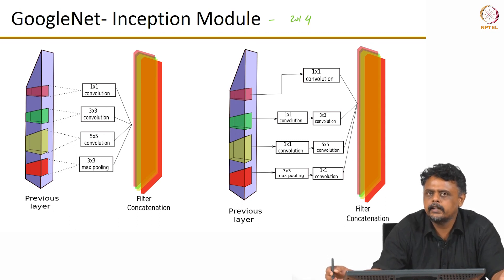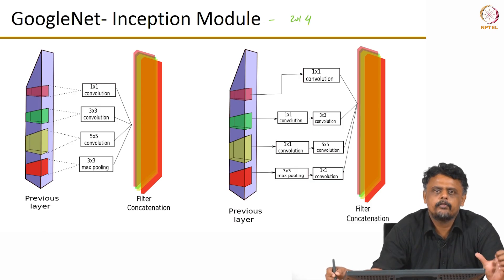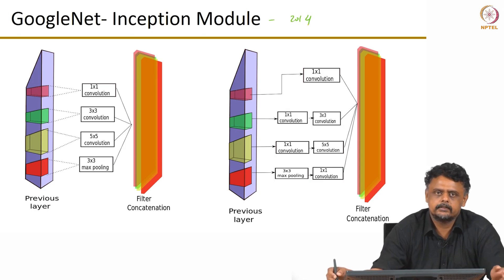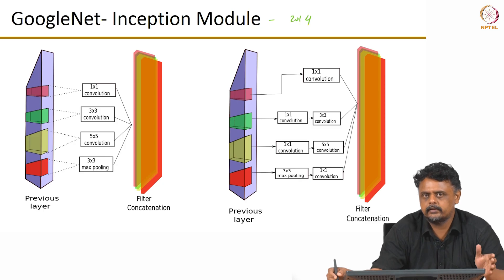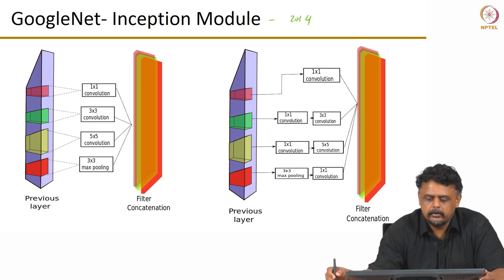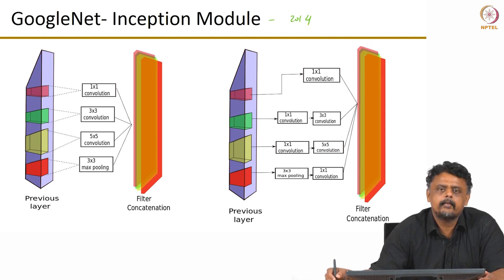For the VGG network that we saw in the previous video, the basic building block was a block of convolutional layers using very small filter sizes. If we recall AlexNet, AlexNet had variable filter sizes — the first layer had 11x11 filters, then 5x5, then 3x3, and then fully convolutional. The inception module incorporates both these concepts, so that every layer has all possible filter sizes.